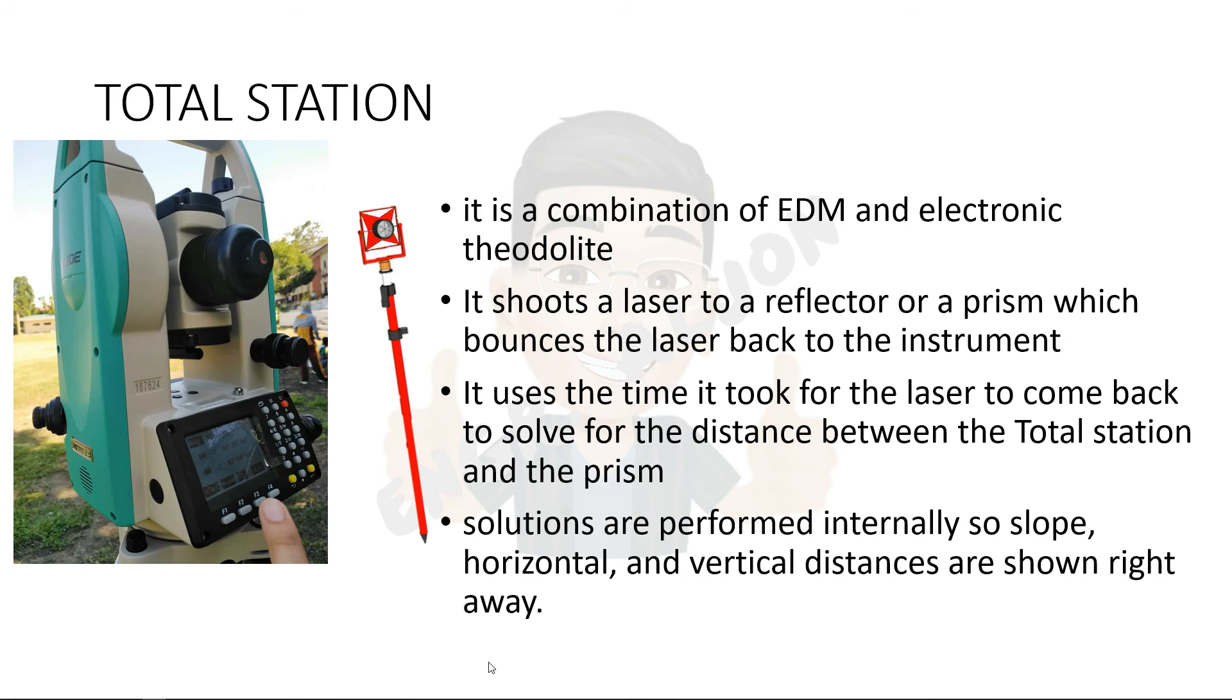It shoots a laser to a reflector or a prism which bounces the laser back to the instrument. It uses the time it took for the laser to come back to solve for the distance between the total station and the prism. Using this instrument saves you a lot of time and effort during the survey, as this gives you data directly. Solutions are performed internally, so the slope, horizontal, and vertical distances are shown right away.